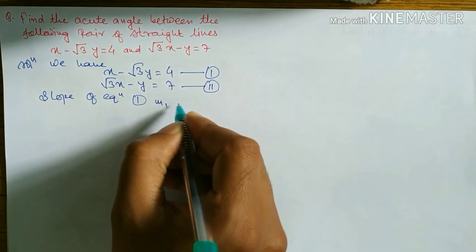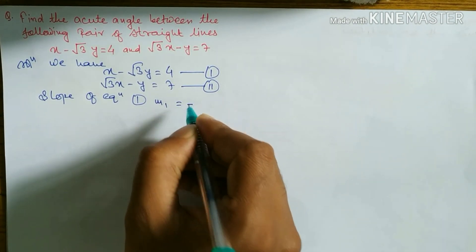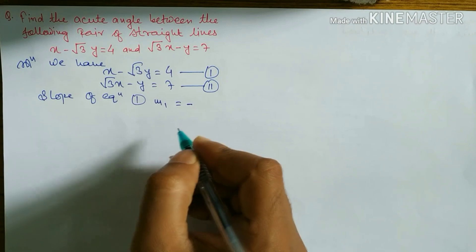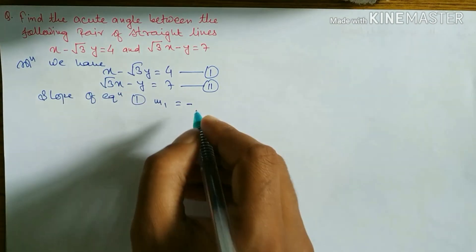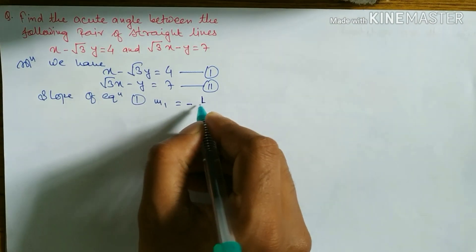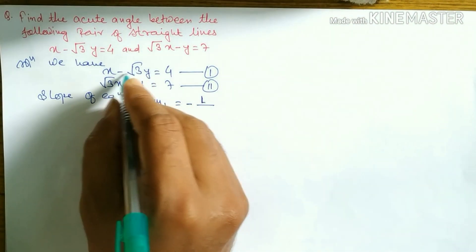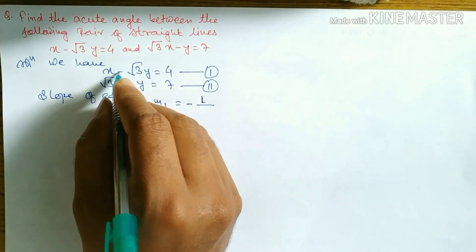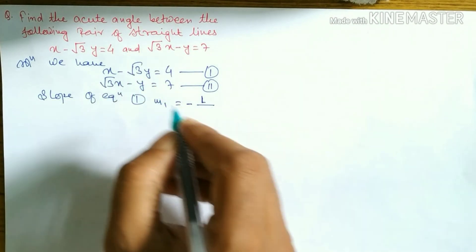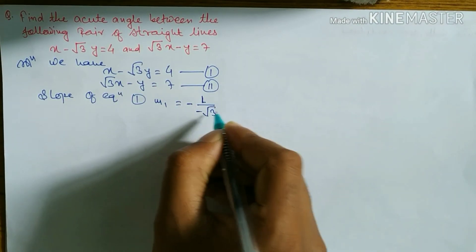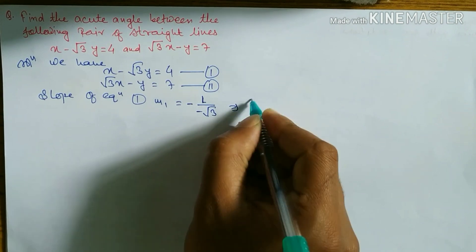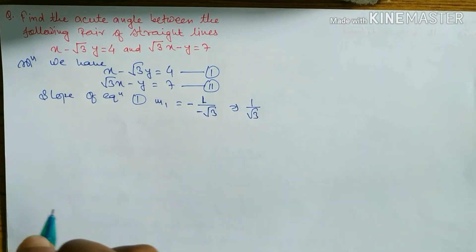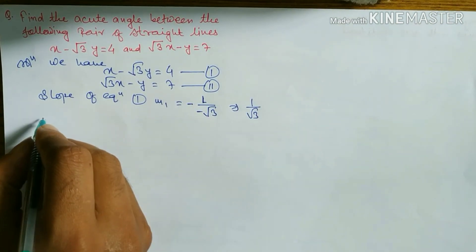For slope of equation 1, let m1 equal to the formula: minus coefficient of x divided by coefficient of y. The coefficient of x is 1 and the coefficient of y is minus root 3. So m1 equals 1 divided by root 3, because the two negatives cancel to give a positive.